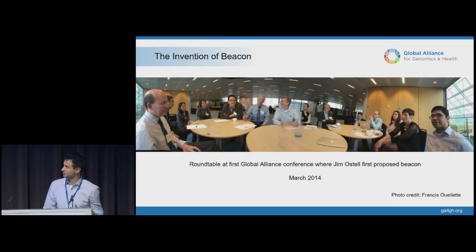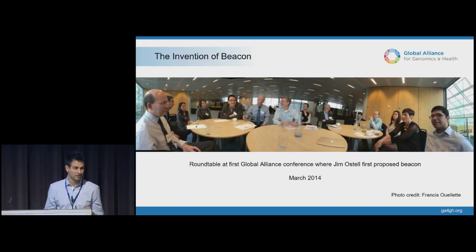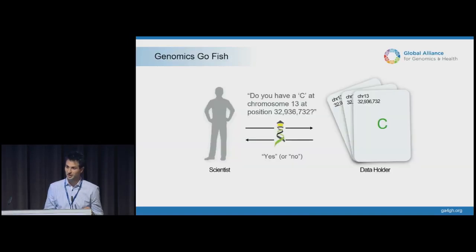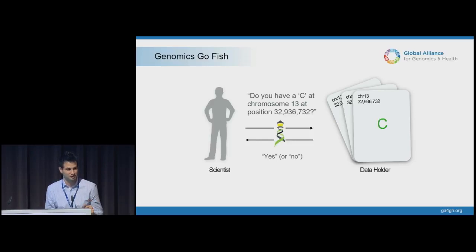Beacon was conceived a little over four years ago at a roundtable at the first Global Alliance conference, with Jim Austell and a bunch of familiar faces. They were deciding what is a litmus test for understanding whether international organizations are actually willing to engage in data sharing. They came up with a very simple, seemingly innocuous start to discovery: as a scientist, I can ask a Beacon, 'Do you have a C at chromosome 13 position X, Y, and Z?' This is similar to the real-life game of Go Fish for genomic variants. The data holder's benefit is that they don't actually expose anything more than yes or no, at least initially.